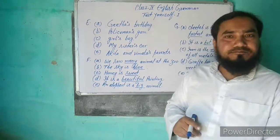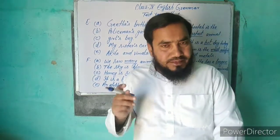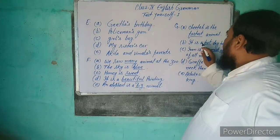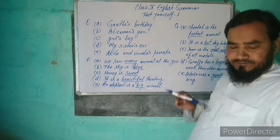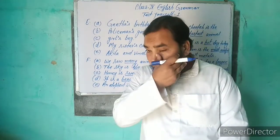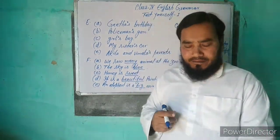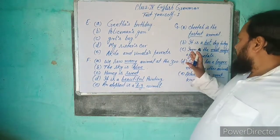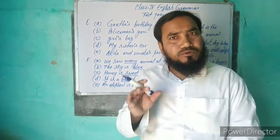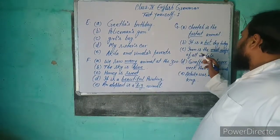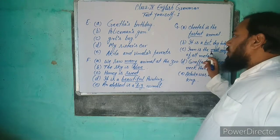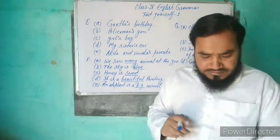B ہے: It is a ___ day today. Box میں hot ہے، تو hot fill ہوگا۔ It is a hot day today۔ C ہے: Iron is the ___ of all metals. Box میں most useful ہے، تو دونوں words لیں گے۔ Iron is the most useful of all metals۔